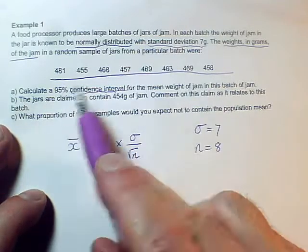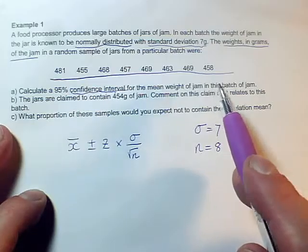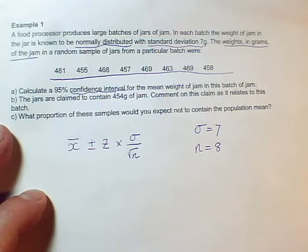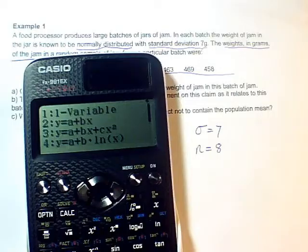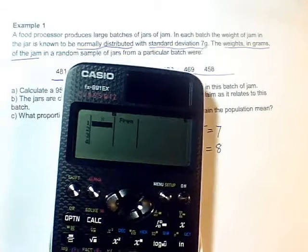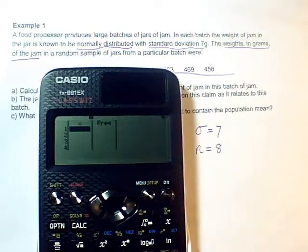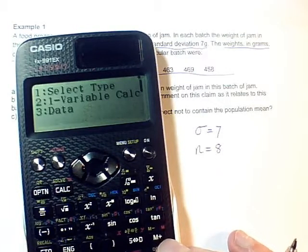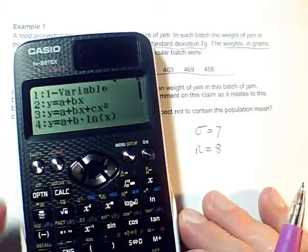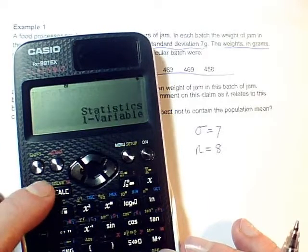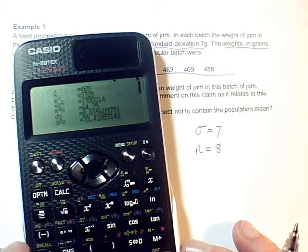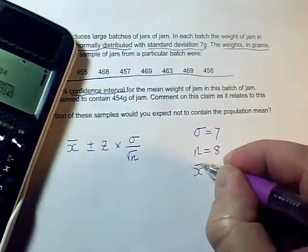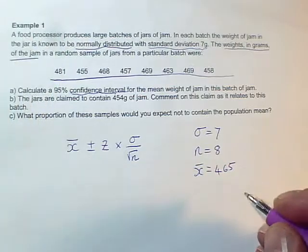X̄, well I haven't got an x̄, but I have got the weights of the sample. So I can work out x̄ by actually adding them together and dividing by 8, or I can go into one variable statistics mode on my calculator and type in my 8 weights here. There they go, they're in. So if I go into one-bar calculations, my x-value, it says there, is 465. So x̄ equals 465 from the calculator.